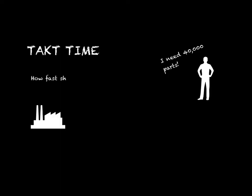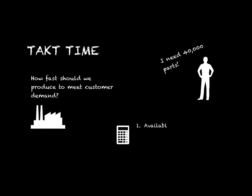What is takt time? It's a calculated value based on demand. It gives the rate of production required in order to meet the customer demand. Two things are needed to calculate it: available time for production and customer demand in units per period of time.